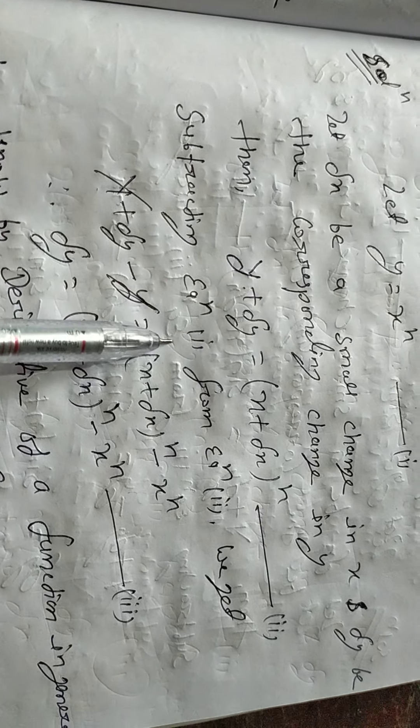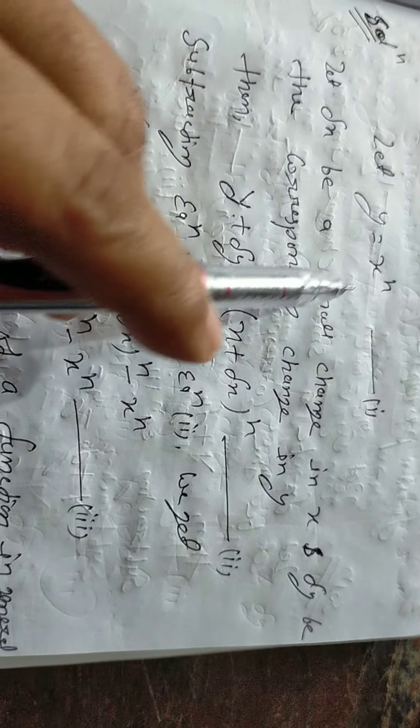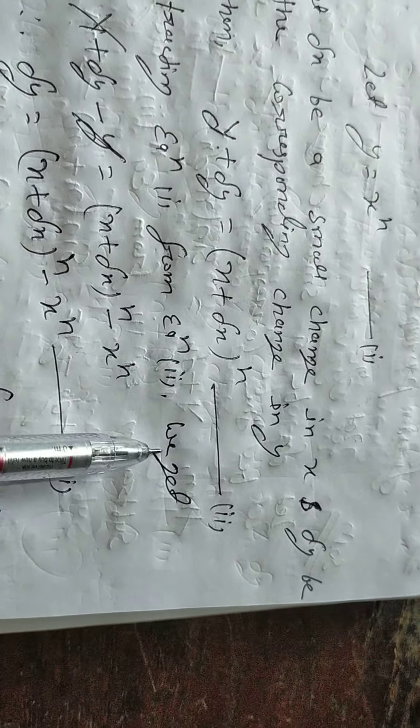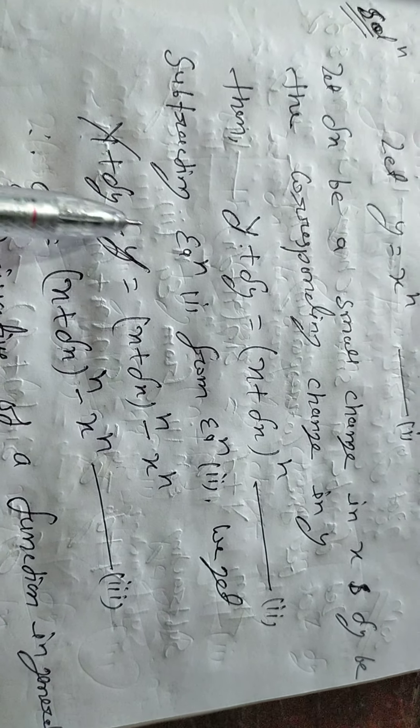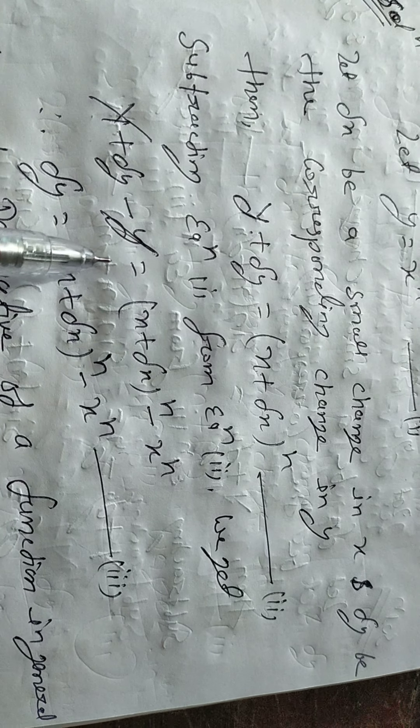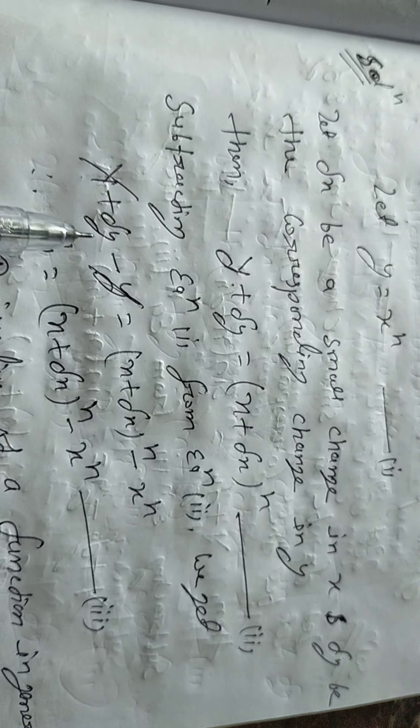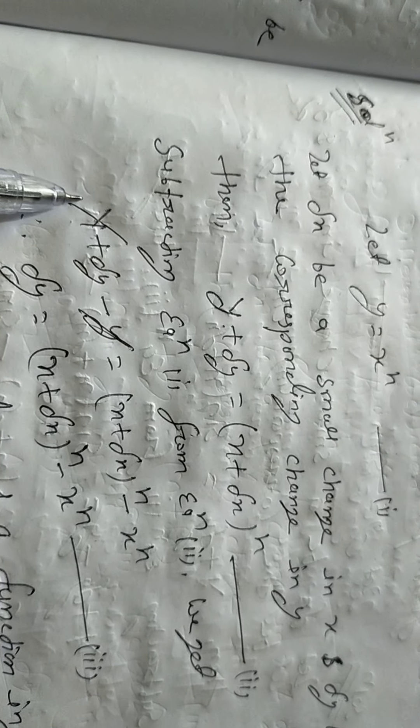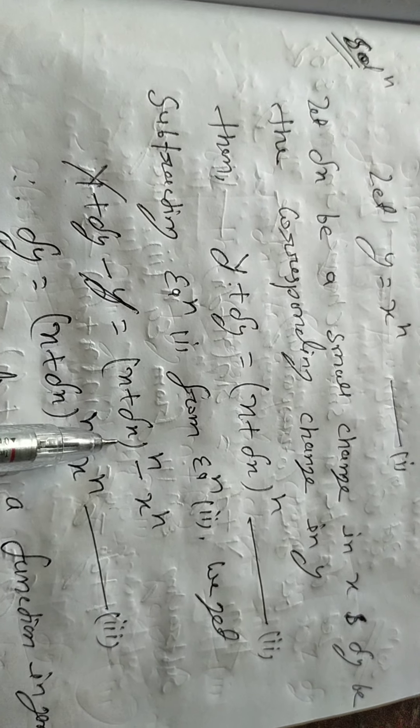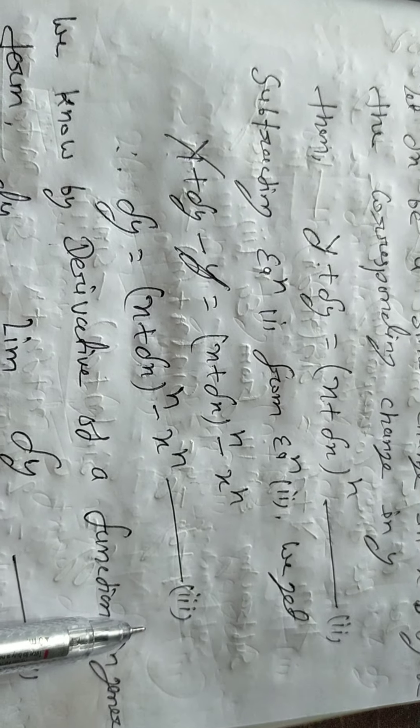Now we subtract equation 1 from equation 2. We get y plus dy minus y equals (x plus dx) to the whole power n minus x to the power n. Then what will happen? y and y will be canceled, then we have (x plus dx) to the whole power n minus x to the power n. This is equation number 3.